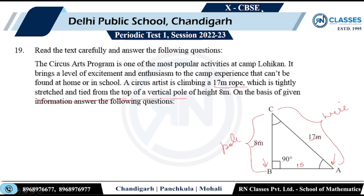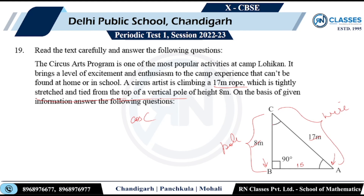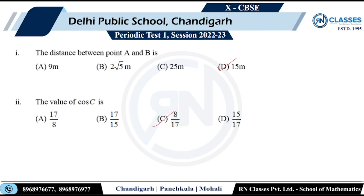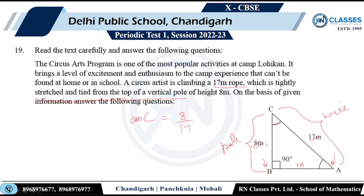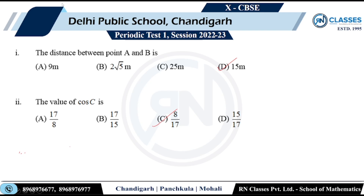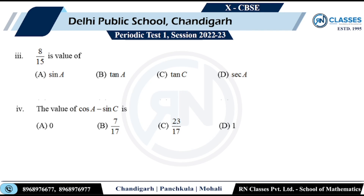Next sub-parts of the case study. Value of cos C: C is at the base; base = 8, hypotenuse = 17, so cos C = 8/17. Option C is correct. The value 8/15 represents tan of angle A (perpendicular 8 over base 15), so option B is correct.